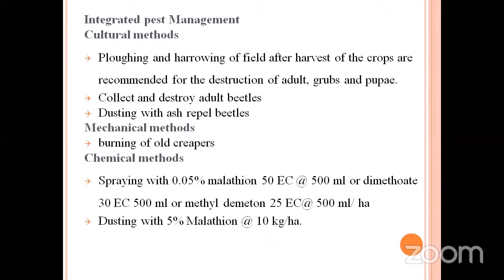Coming to management: under cultural practice, deep summer ploughing exposes the grubs and pupae. After harvest of the crop, deep ploughing should be followed. Collect and destroy adult beetles, and dusting the plant with ash will repel the beetles. Under mechanical methods, burning of the old creeper plants is recommended. The chemicals recommended for this pest are: spraying of 0.05% malathion 50 EC at the rate of 500 ml, or dimethylate 30 EC 500 ml per hectare, or methyl demeton 25 EC at the rate of 500 ml per hectare. Otherwise, dusting with 5% malathion at the rate of 10 kg per hectare.